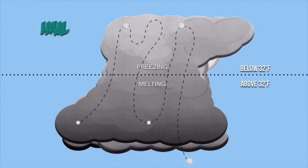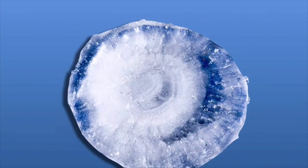A hailstone starts out as a small ice pellet. It will be pushed upwards through updrafts, going through the freezing process, and then pushed downwards by downdrafts to melt a little bit. This upward and downward movement inside the cumulonimbus cloud adds layers. If you cut a hailstone in half, you can see the layers that have been added as it went through repeated freezing and melting cycles.